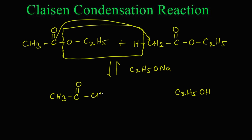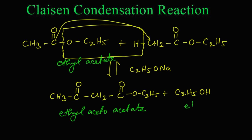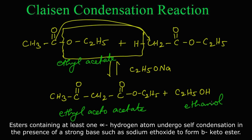The acetyl part attaches to the remaining ethyl acetate fragment, giving the product: CH3-C(=O)-CH2-C(=O)-OC2H5. This compound has an aceto group and an ethyl ester group, so its name is ethyl acetoacetate. The other product of the reaction is ethanol.